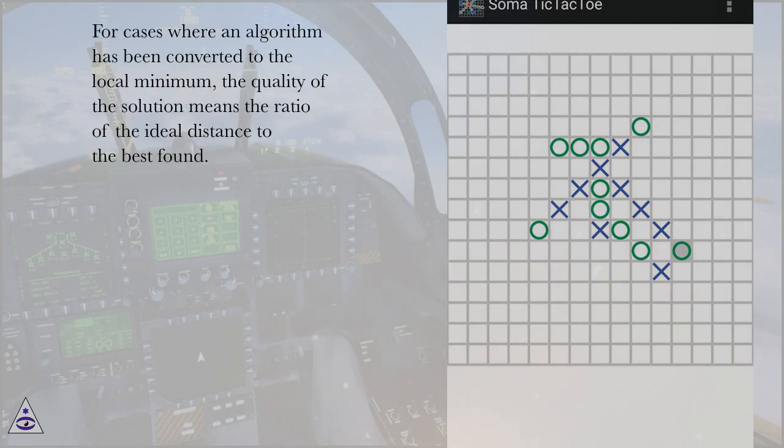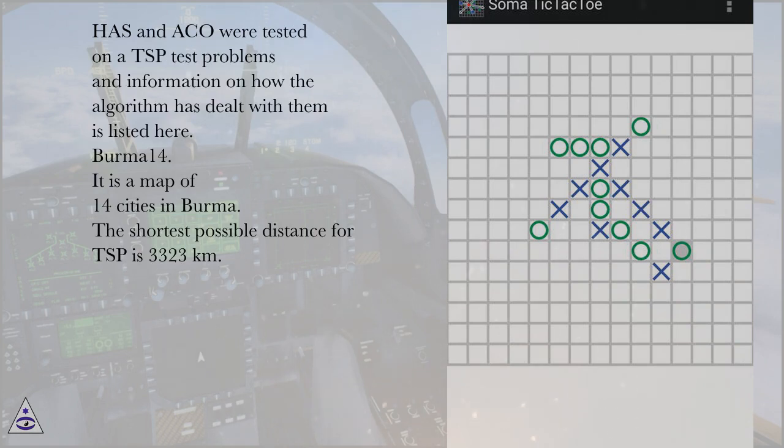For cases where an algorithm has been converted to the local minimum, the quality of the solution means the ratio of the ideal distance to the best found. ACO were tested on TSP test problems and information on how the algorithm has dealt with them is listed here.